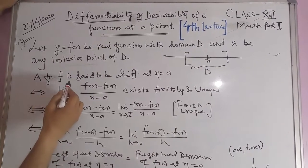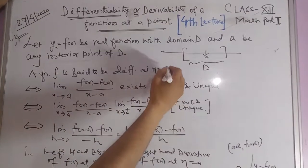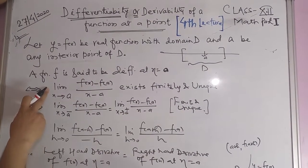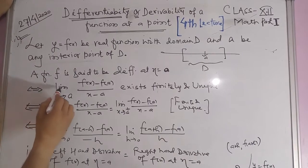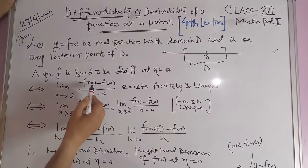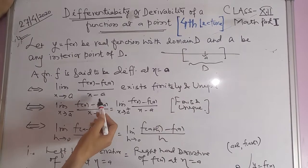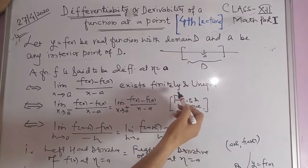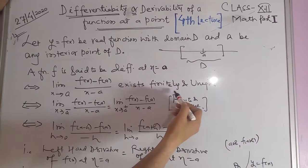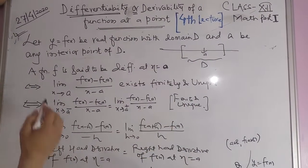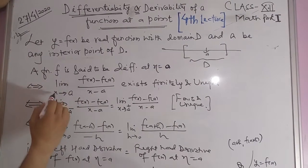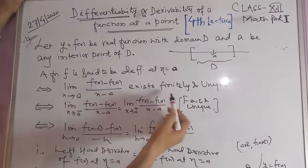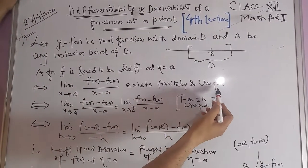A function f is said to be differentiable at x equal to a if the limit as x tends to a of [f(x) minus f(a)] upon [x minus a] exists finitely and is unique.